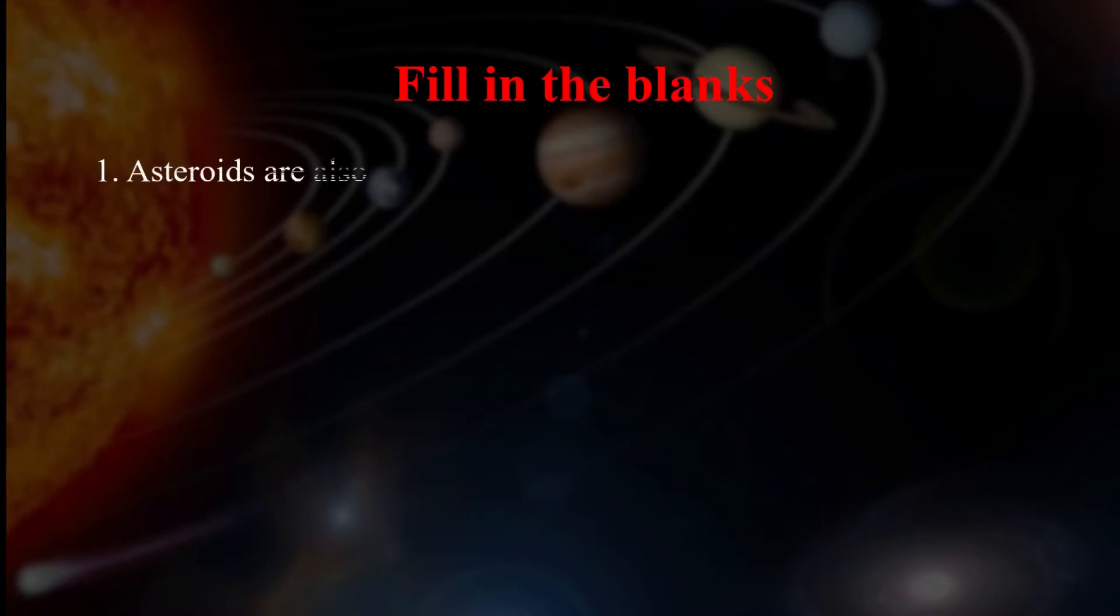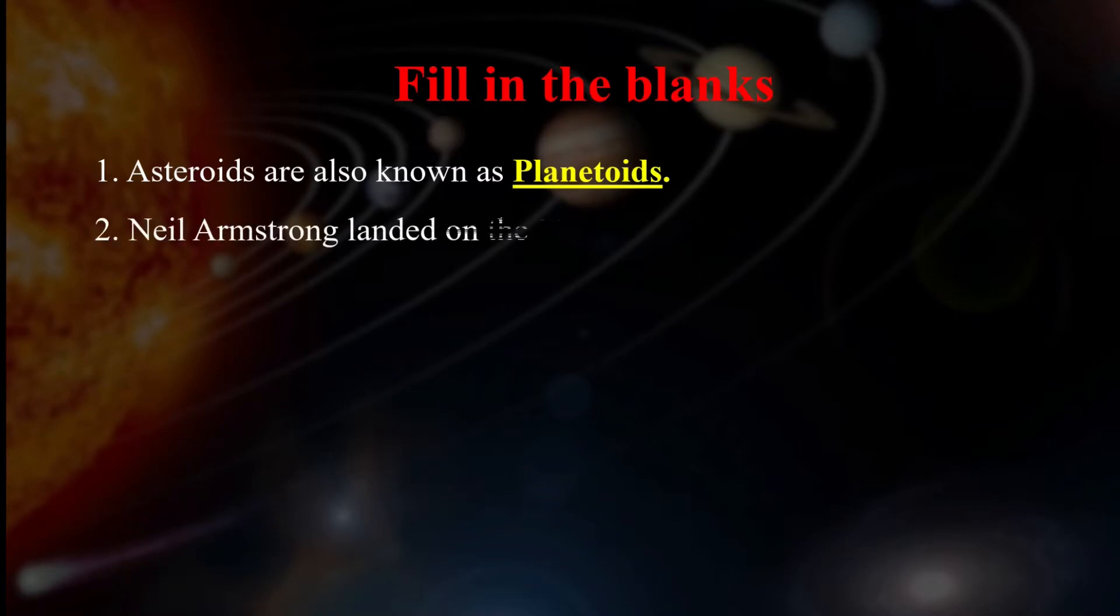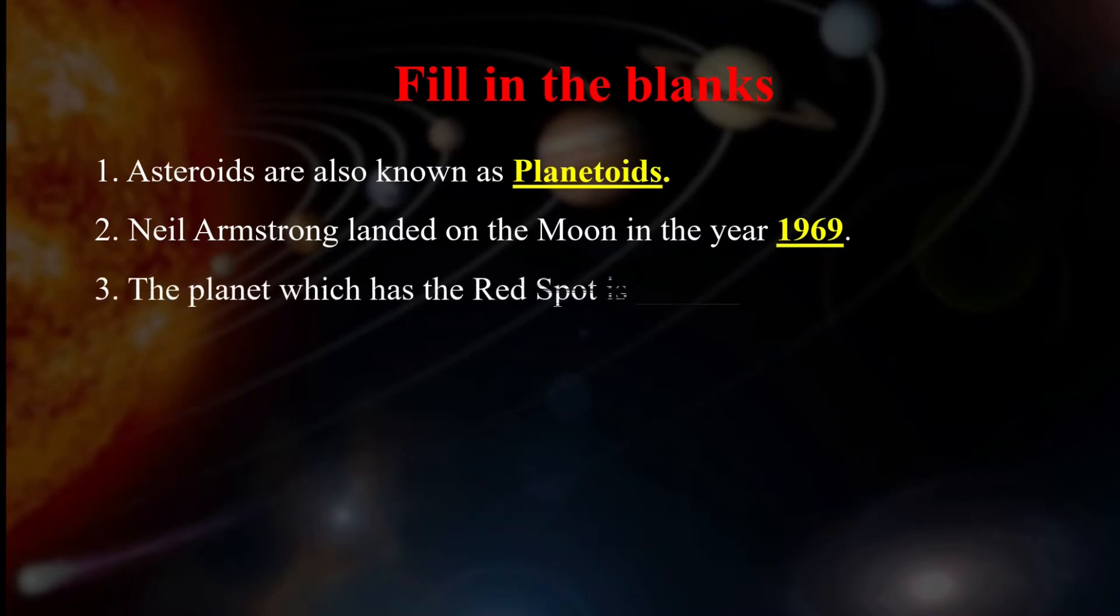So let's see what we know by reading fill in the blanks. First, asteroids are also known as planetoids. Next, Neil Armstrong landed on the moon in the year 1969, almost 50 years ago.